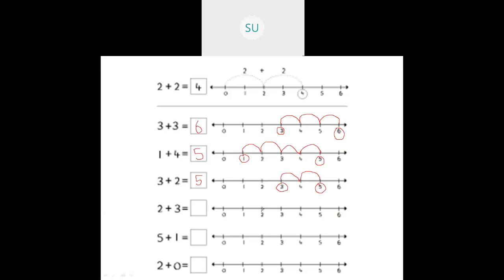Then 2 plus 3 — circle 2 on the number line, then add 3 steps — 1, 2, 3. We reached 5. So 2 plus 3 is 5. Now 5 plus 1 — circle 5, then count 1 step. So 5 plus 1 is 6. Then 2 plus 0 — circle 2. Since 0 means nothing, we don't add any steps. So 2 plus 0 is 2 itself. This is how you do addition using number line.